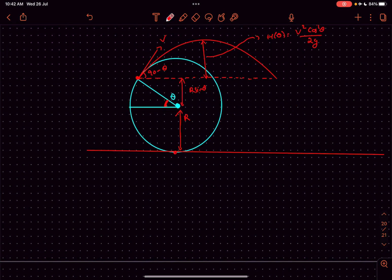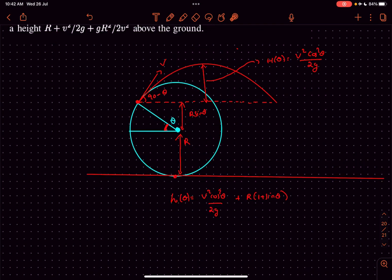So finally we have the height as a function of theta: it would be v²cos²θ/(2g) + r sin θ. This is how high a particle is going to rise if it is projected from an angular position of theta.